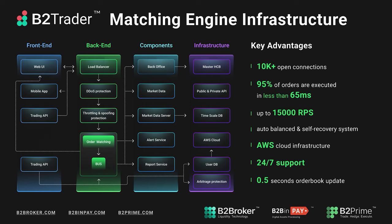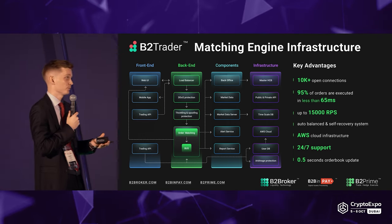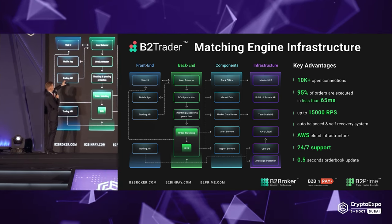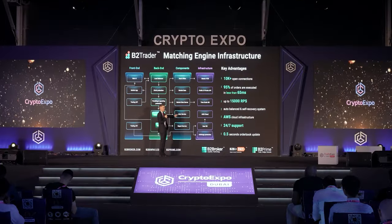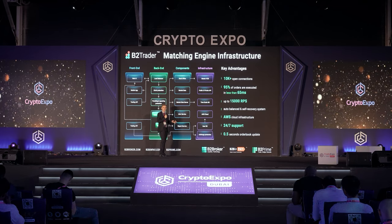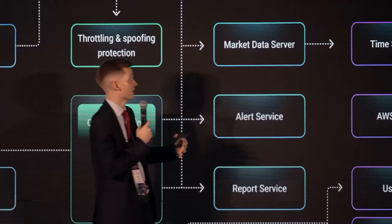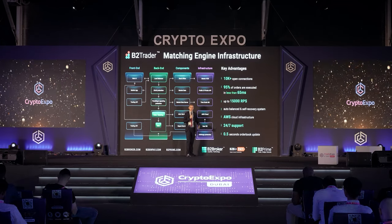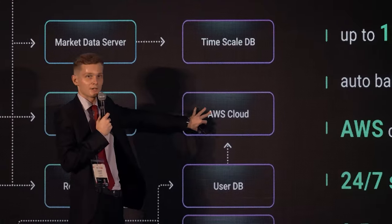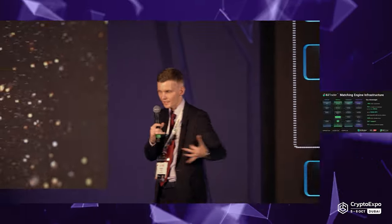This refers to the infrastructure — the heart of the trading platform. It comes down to having a trading API, web UI plus mobile application, and the order management and order matching system, which includes multiple services: an alert service, a report service for fully customized trade reports, a market data server, and a back office. There is also a public and private API for traders. The whole thing is hosted on AWS services so that it's scalable — if traffic increases, it automatically scales higher.